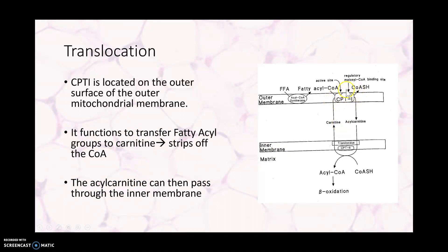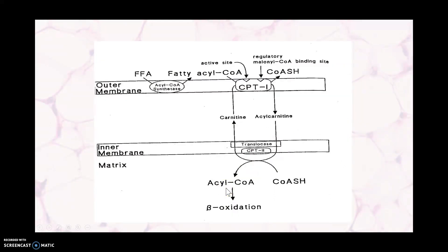CPT1 strips off the CoA, and acyl-carnitine can now traverse the inner mitochondrial membrane and come into the inner mitochondrial matrix. Once inside, we head on into beta oxidation, which is our next step. So CPT1 strips the CoA, acyl-carnitine is formed, we bring it into the mitochondrial matrix, and then we can engage in beta oxidation.